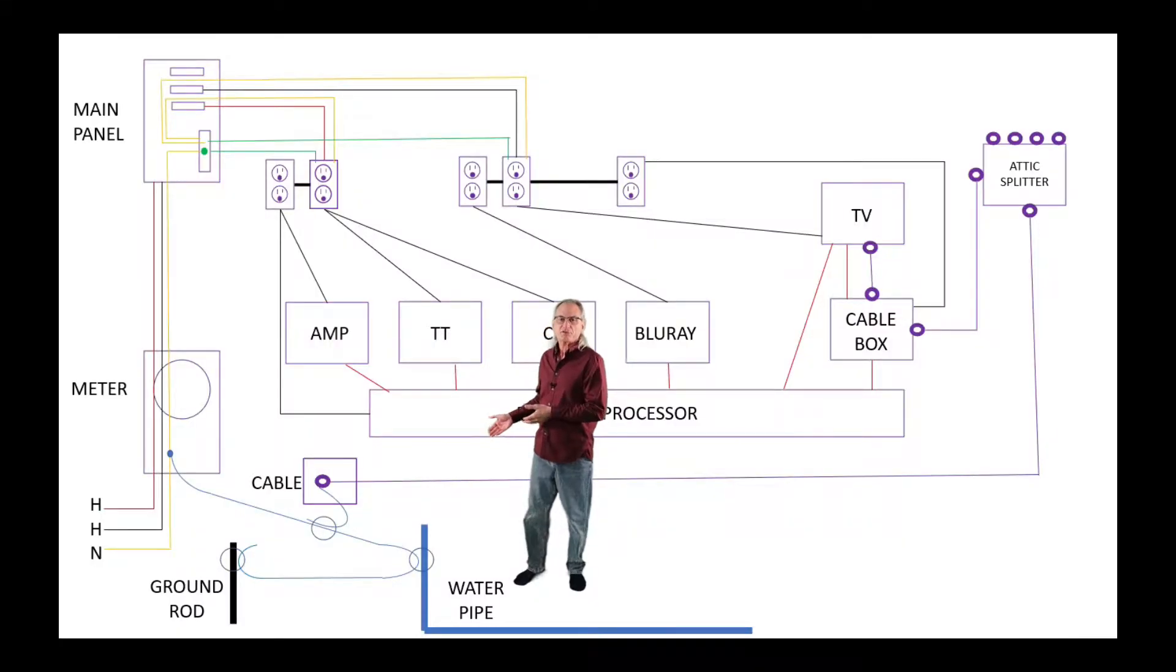This is the architecture of my home utilities and my AV system to help you understand how this all works. We got the power company coming in over here, goes into the meter, up into the service entrance panel. From there all the wiring goes to your house. Your outlets are daisy-chained throughout your house. So everywhere an outlet's daisy-chained there's a connection. You got to be aware of that.